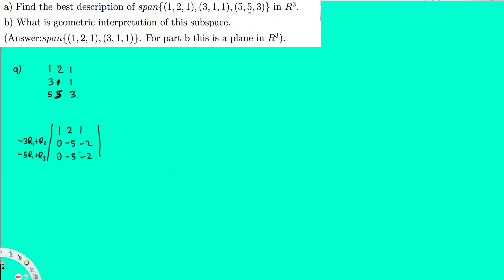Since the second and third rows have the same numbers, we can eliminate one of them. I multiply the second row by negative 1 and add it to the third row — negative R2 plus R3 gives us 0 0 0. To complete Gauss-Jordan, I divide R2 by negative 5 to make the pivot equal to 1.